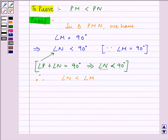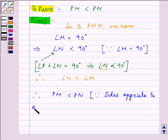So therefore PM is less than PN because sides opposite to greater angle is larger.